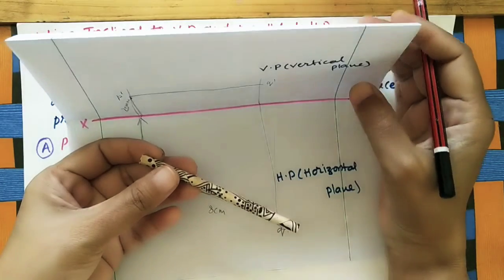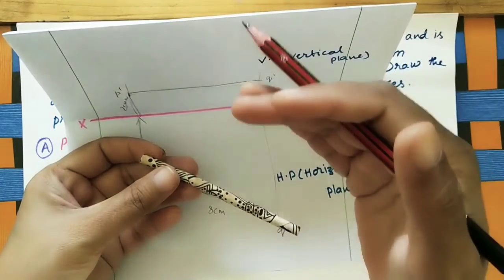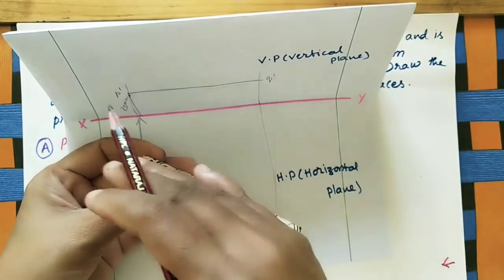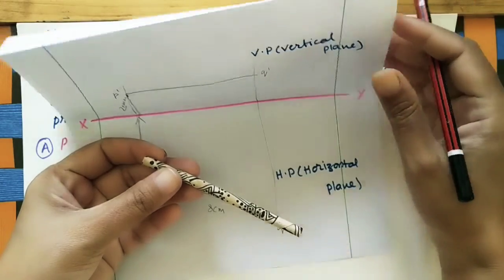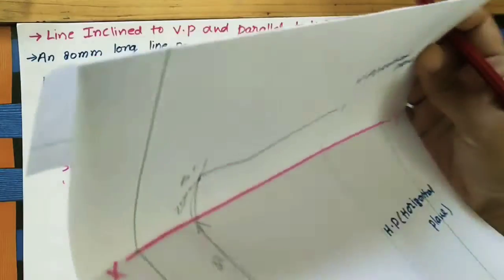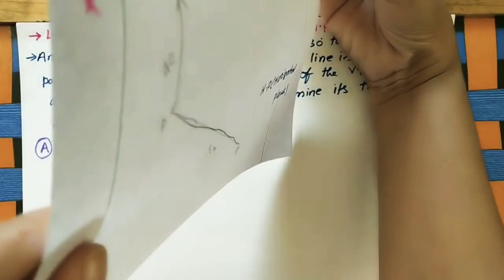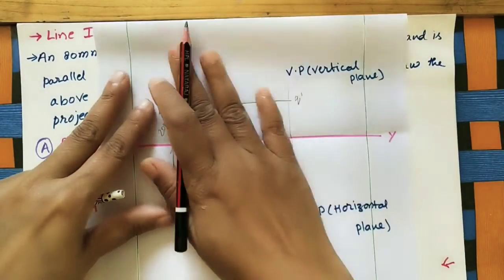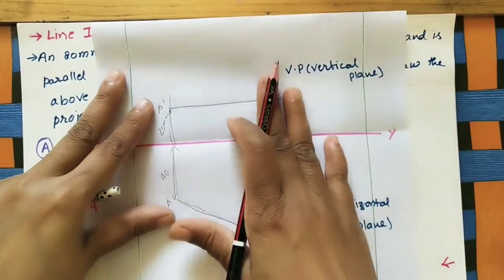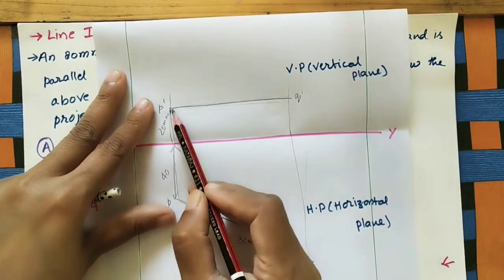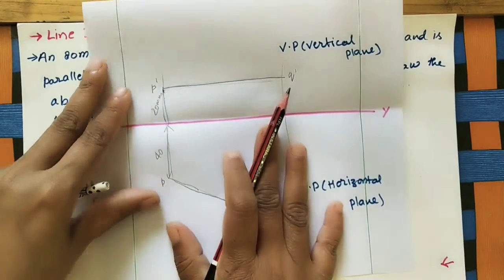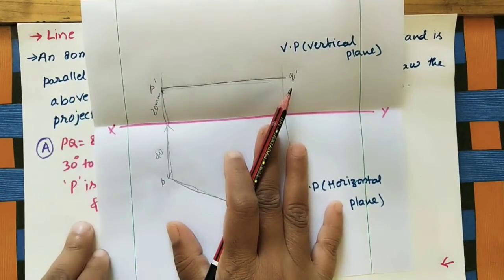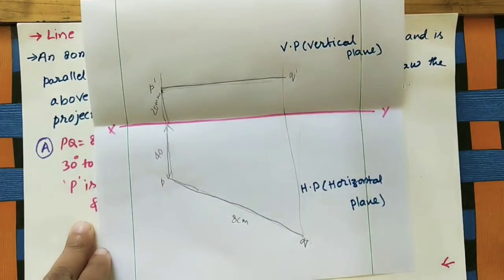We use orthographic projections because in 3D we can't easily set up 90-degree planes every time. By tilting the horizontal plane downward, we can easily represent the 3D view in 2D. This is the front view and this is the top view.